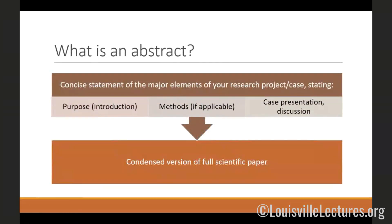So let's start with the basics. What is an abstract? An abstract is a concise statement of the major elements of your research project, and that can include a case. It simply states the purpose of your research or introduction of the case you'll be talking about, the methods if they apply, and of course the case presentation and discussion section. In a sense, this is a condensed version of a full scientific paper, or it's a simple case presentation that has an added discussion section and a review of the available literature.